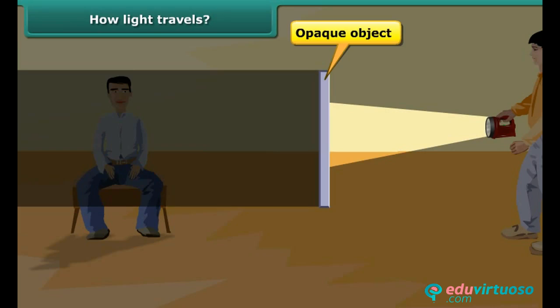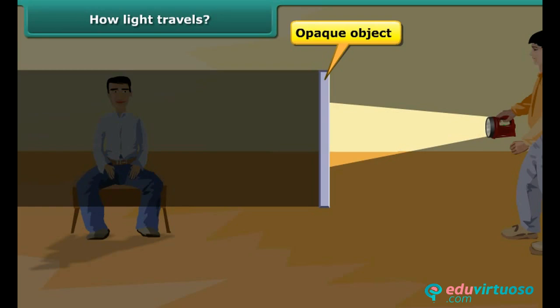If we keep an opaque object in front of the source of light, the path of light is obstructed, thus forming a shadow behind the opaque object. This shows that light travels in a straight line, else we could have seen through the opaque object.